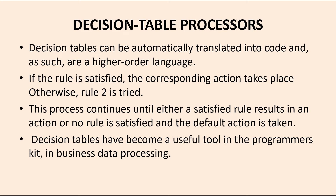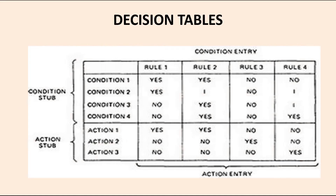If no rule is satisfied, then the default action is taken. For example, if rule 1 is satisfied we go for action 1, if rule 2 is satisfied we go for action 2, and if neither rule is satisfied we go to the default action. Decision tables are a very useful tool for programmers and are also widely used in business data processing.